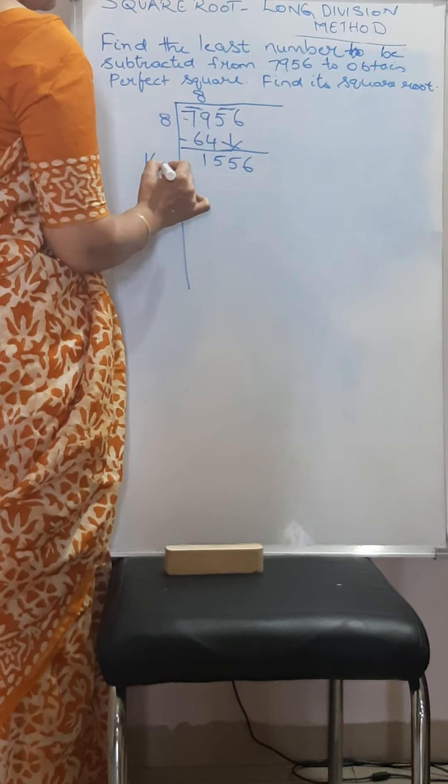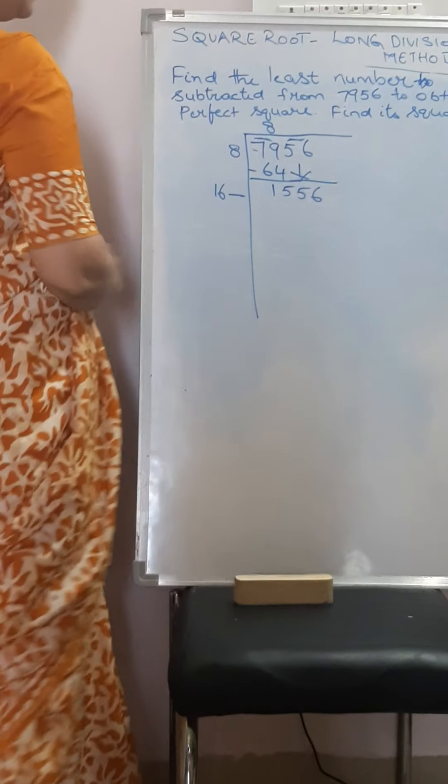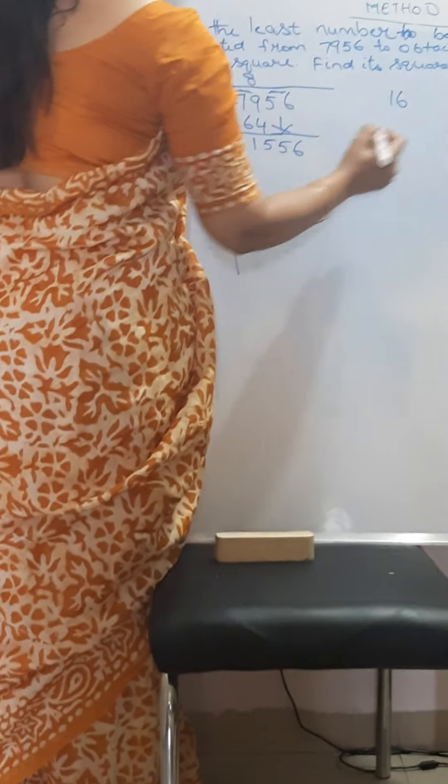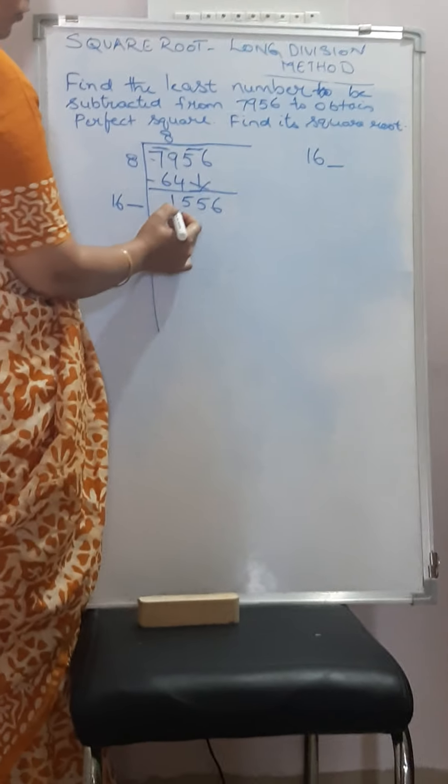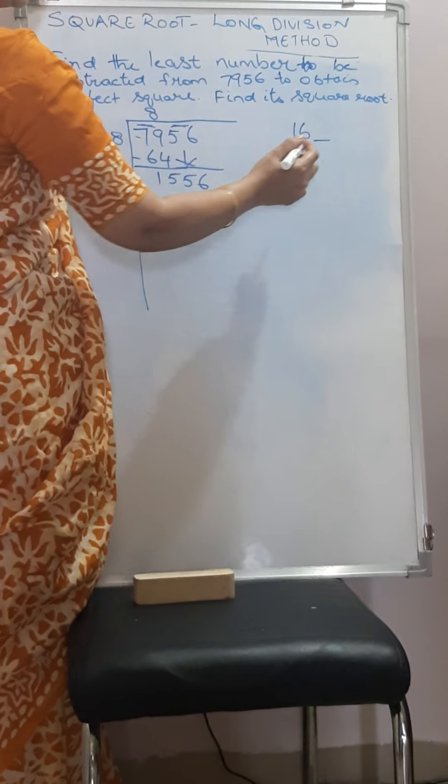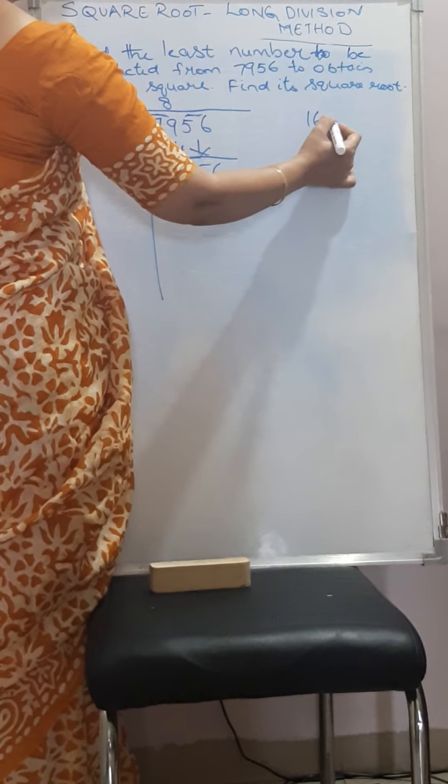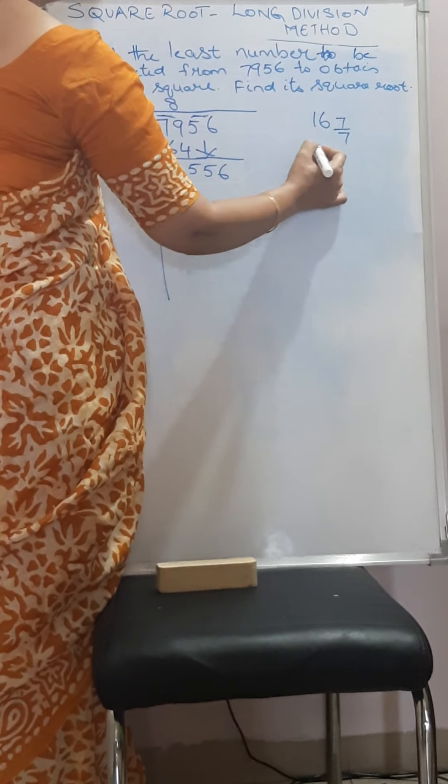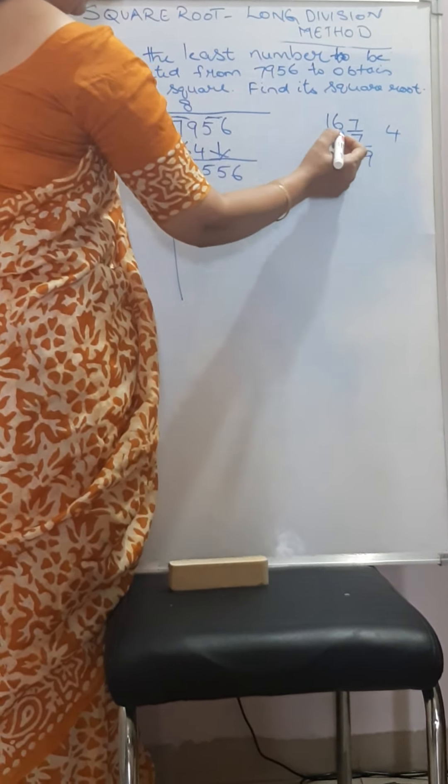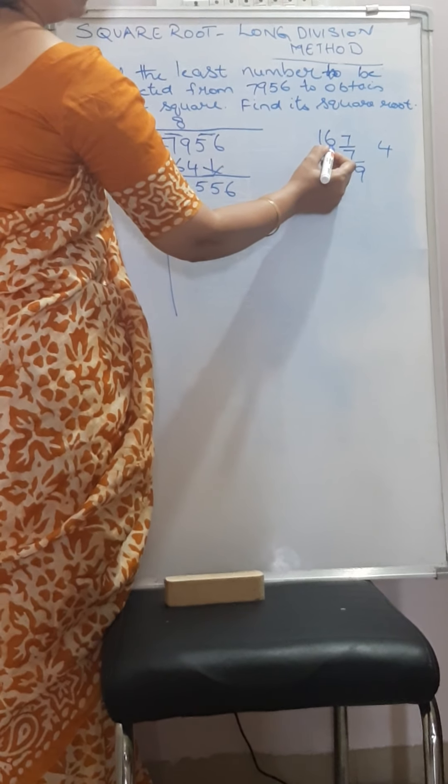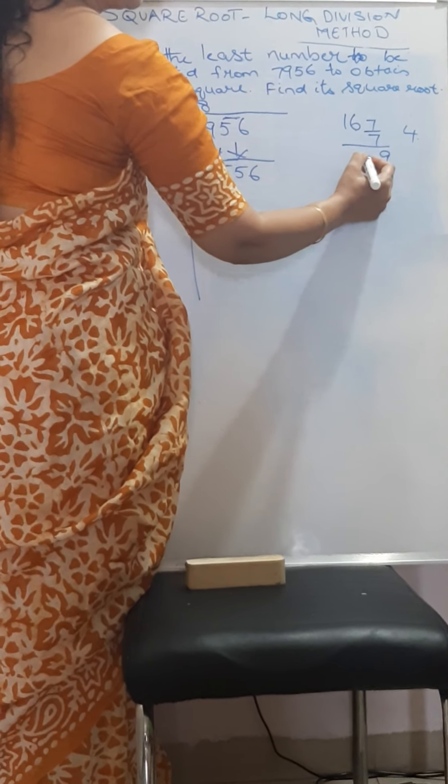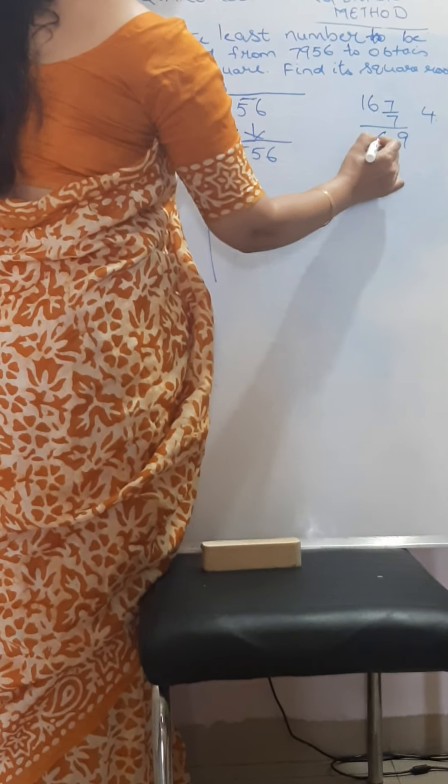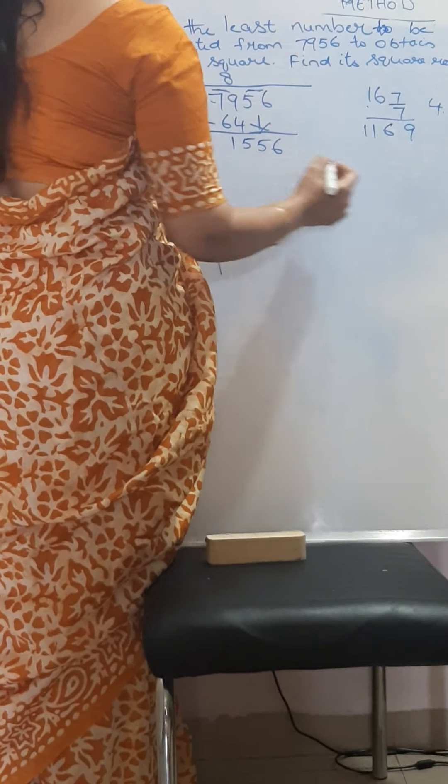Then 8 should be doubled, 16. Let us find out which suitable number to fill in the blank space so that we will get a number less than or equal to 1556. 167 times 7: 7 times 7 is 49, 7 times 6 is 42 plus 4 equals 46. 7 times 1 is 7 plus 4 equals 11. This is still less.